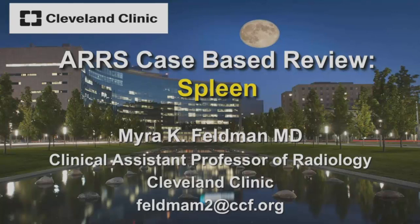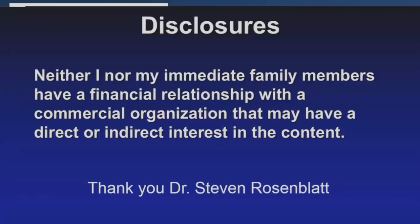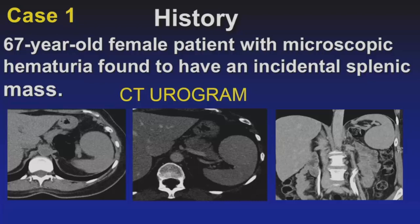Welcome, everyone in our live studio audience and everyone at home. For the next 20 minutes, we're going to be talking about the spleen. I have no relevant disclosures, and I wanted to thank Dr. Rosenblatt, who contributed to some of the cases — he's a spleen surgeon at our institution. Our first case is a 67-year-old female with microscopic hematuria, found to have an incidental splenic mass. This is really not an uncommon history — a lot of splenic lesions are identified incidentally in completely asymptomatic patients.